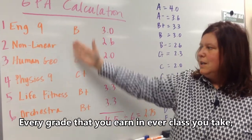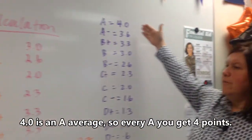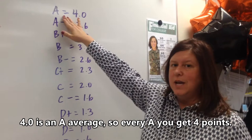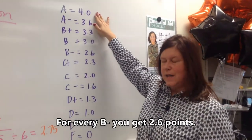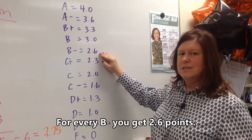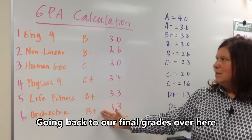Every grade that you earn in every class that you take has a point value assigned. 4.0 is an A average. So every A you get, you get 4 points for that A. For every B-minus you get, you get 2.6 points. So going back to our final grades over here from first trimester...